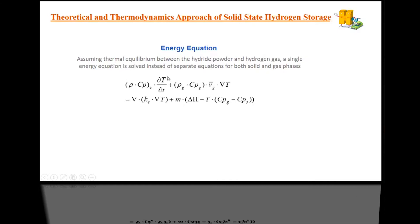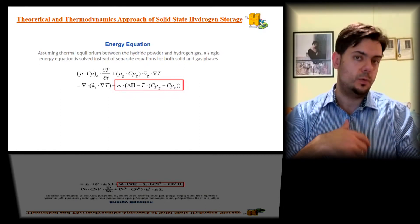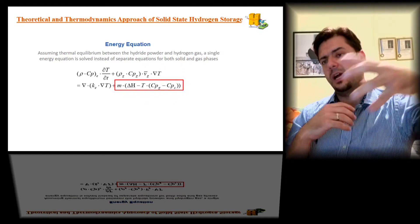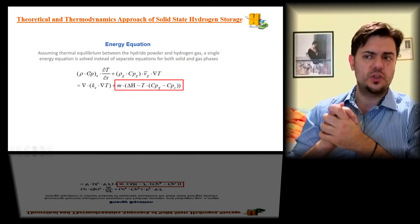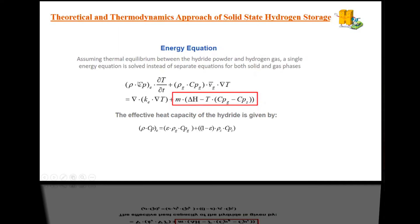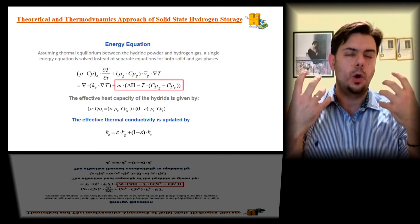The energy equation has the temperature gradient over time, the temperature gradient term, and a heat source term highlighted in red. The heat source accounts for the exothermic reaction during hydrogen storage — where heat is produced — or the endothermic reaction during release, where heat must be supplied. The heat source units are watts per meter cubed.